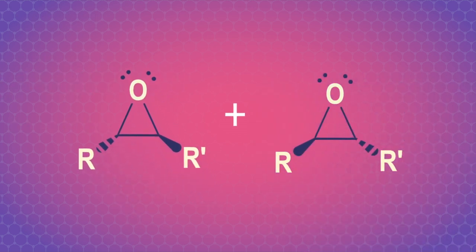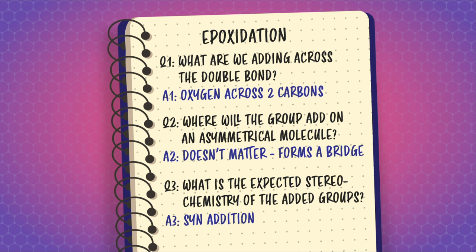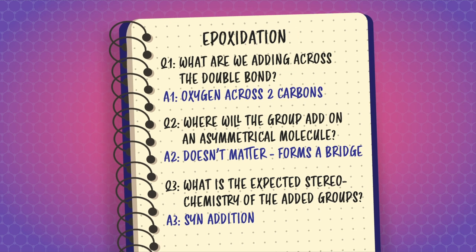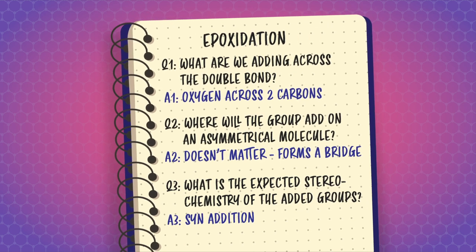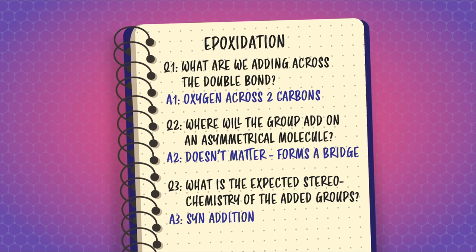The oxygen bridge can form on either side of the double bond, so we get two different enantiomers as products in a racemic mixture — which means equal amounts of each one. Overall, epoxidation has a pretty straightforward combo, and we can sum it up with a card.